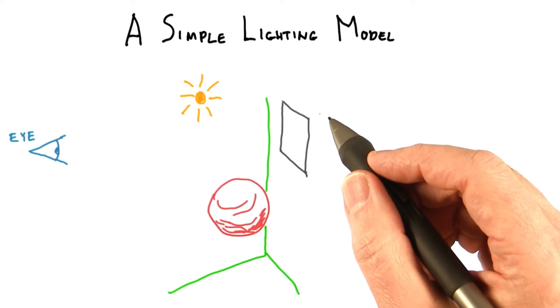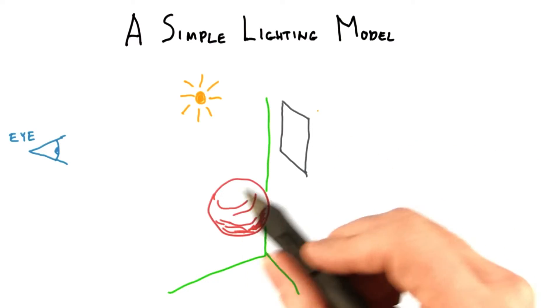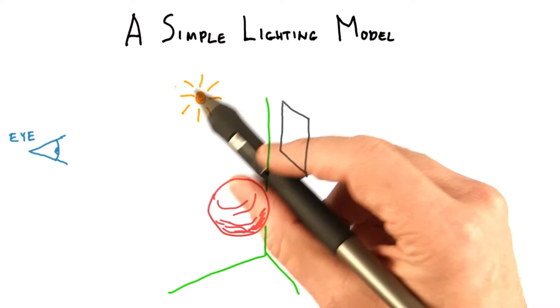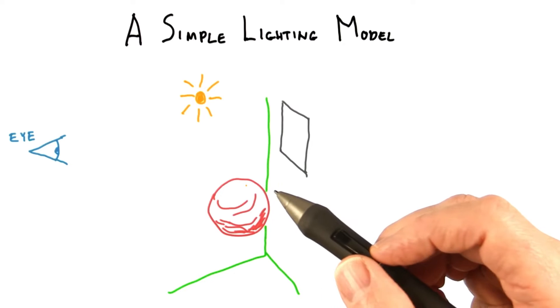We now know a lot about color, but nothing yet about materials. Say we have a red ball. How do we make the GPU compute how the lights in the scene and the ball's material interact so that the ball looks real?